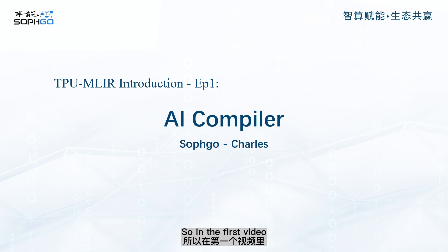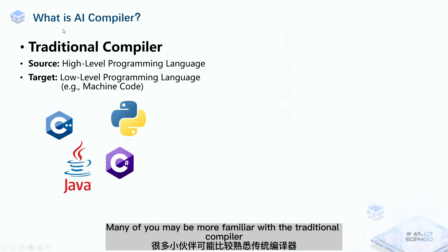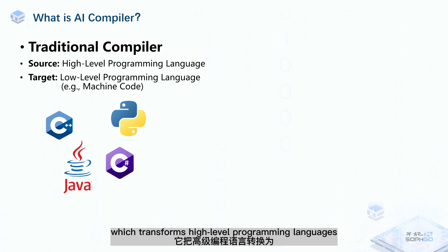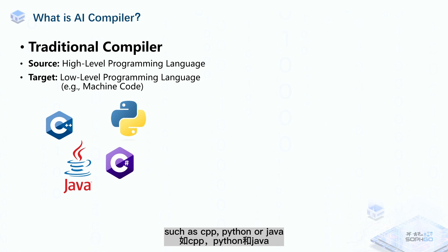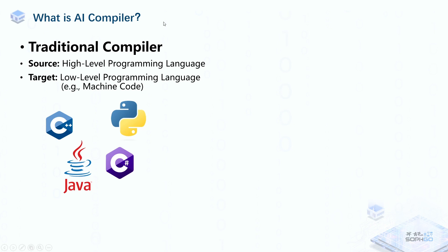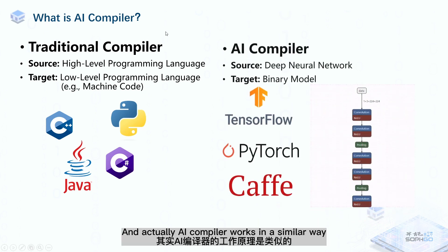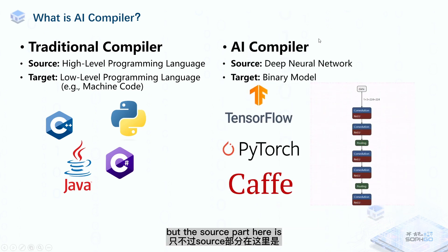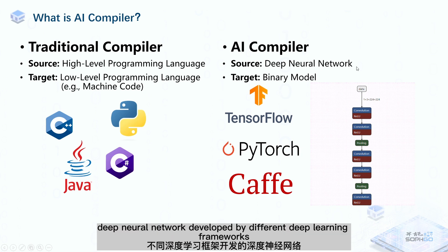In the first video we're going to talk about what is an AI compiler. Many of you may be more familiar with the traditional compiler, which transforms high-level programming languages such as C++, Python, or Java to a low-level one that's understandable for our CPU or operating systems. Actually, AI compiler works in a similar way, but the source part here is a deep neural network developed by different deep learning frameworks.